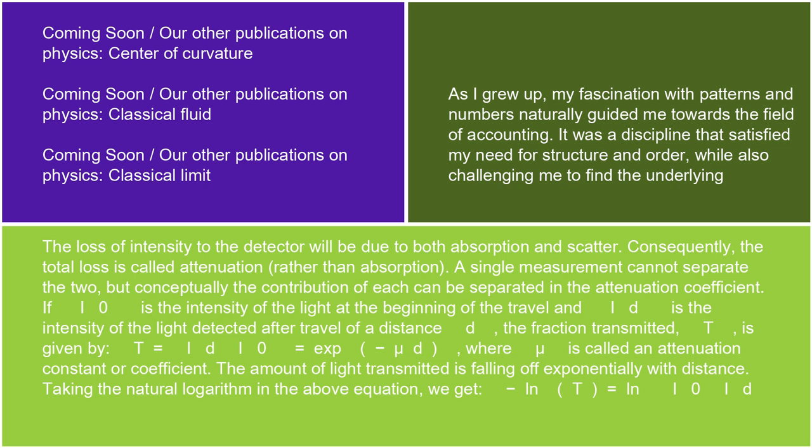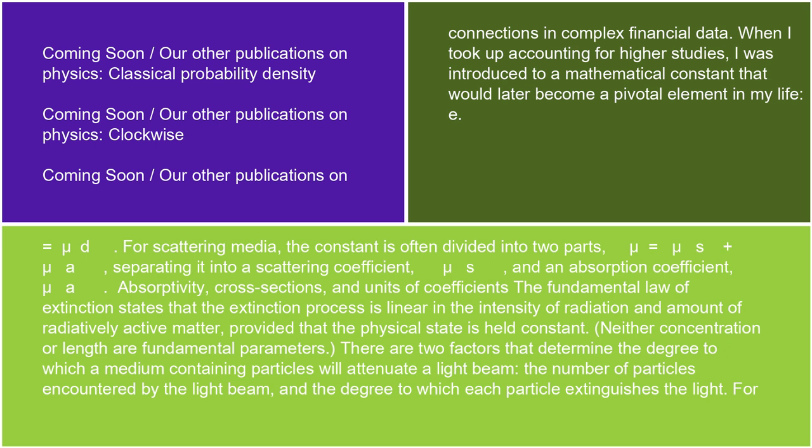The amount of light transmitted is falling off exponentially with distance. Taking the natural logarithm of the above equation, we get −ln(T) = ln(I₀/I_D) = μd. For scattering media, the constant is often divided into two parts, μ = μ_s + μ_a, separating it into a scattering coefficient μ_s and an absorption coefficient μ_a.